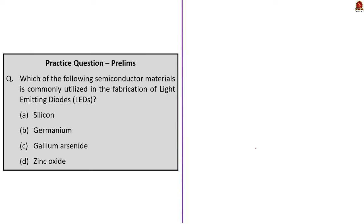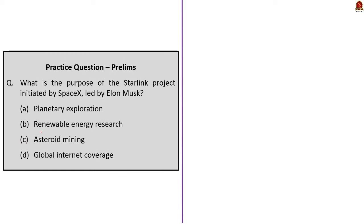Question 2: Which semiconductor material is commonly utilized in the fabrication of Light Emitting Diodes? The correct answer is gallium arsenide. Question 3: What is the purpose of the Starlink project initiated by SpaceX led by Elon Musk? The correct answer is option D — global internet coverage.